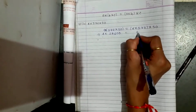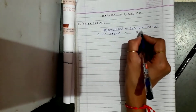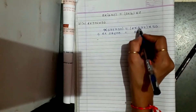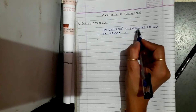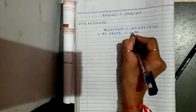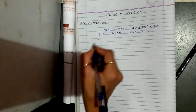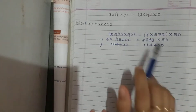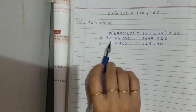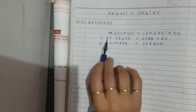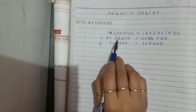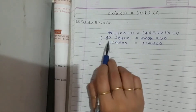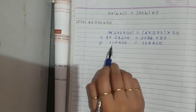Continuing the multiplication: 4 sevens are 28, 2 carry; 4 fives are 20 and 2 gives 22, write 2 carry 2; and so on to get 50. Then: 4 sixes are 24; 4 eights are 32 plus 2 gives 34, 3 carry; 4 twos are 8 and 3 gives 11.